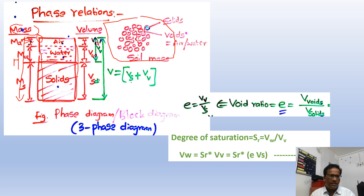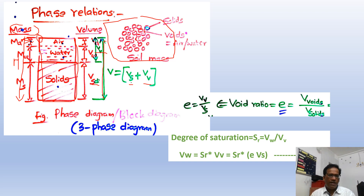Now on the volume side, we have total volume, capital V, of the soil mass, which includes volume of solids Vs plus volume of voids Vv. Within the voids we can expect water and air, so Vv is equal to Vw plus Va.